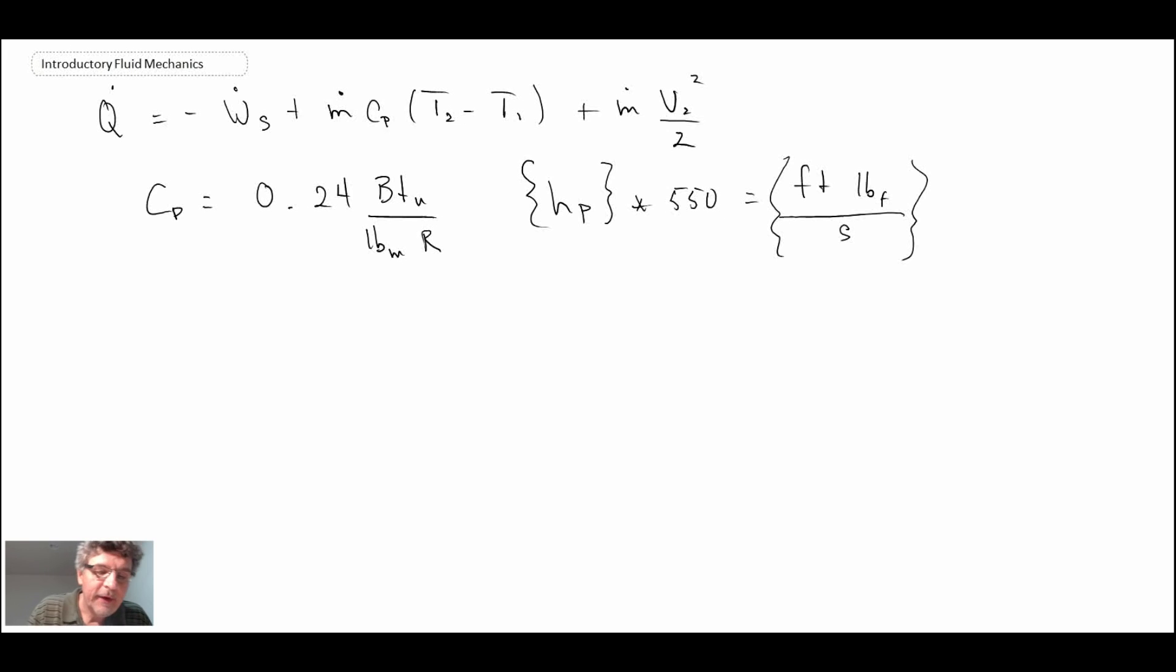Okay, so we have the value of c sub p and we have a conversion between horsepower and foot pound per second, so let's go through and plug everything in.